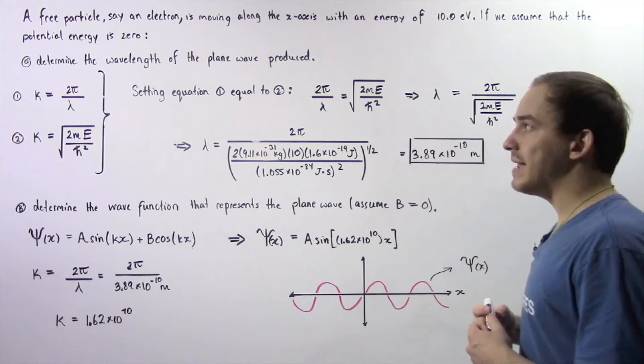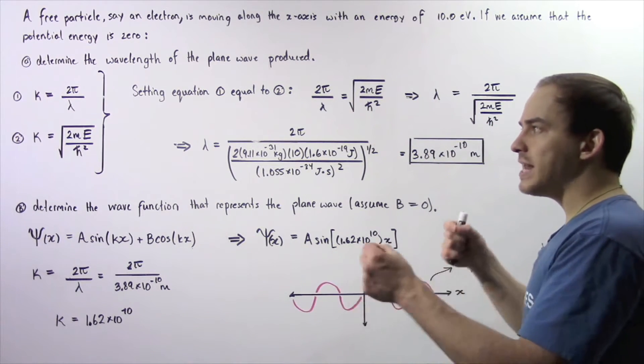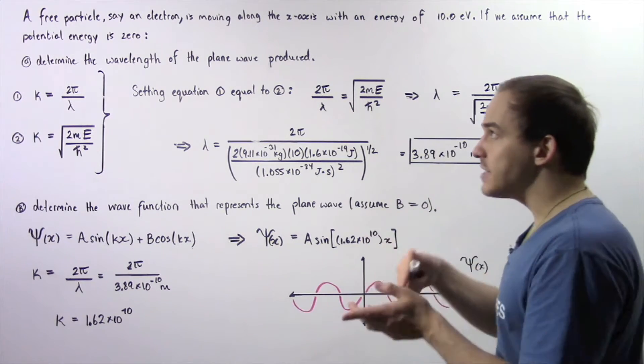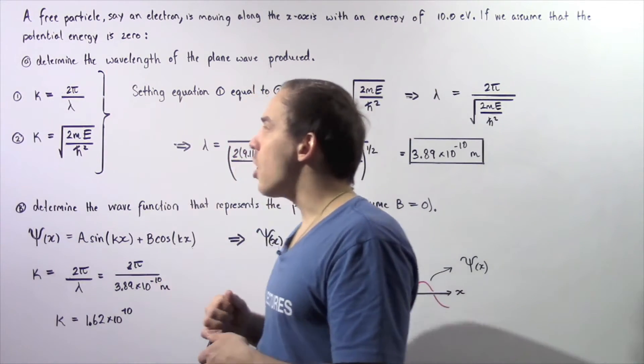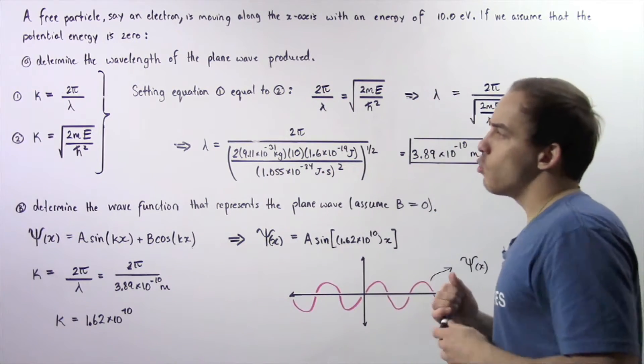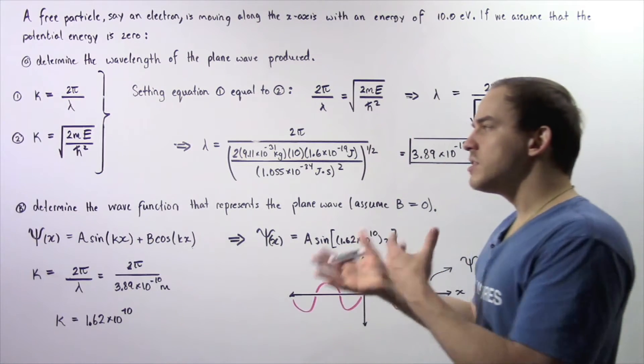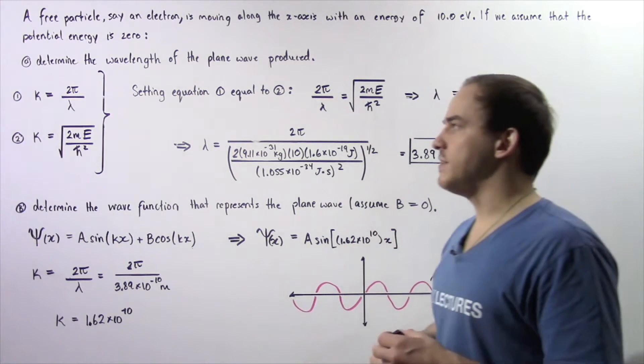In part a, we want to calculate the distance between any two consecutive crests of the plane wave that is produced by the free particle. To do this, we're going to use equations 1 and 2 that we spoke about in the previous lecture.